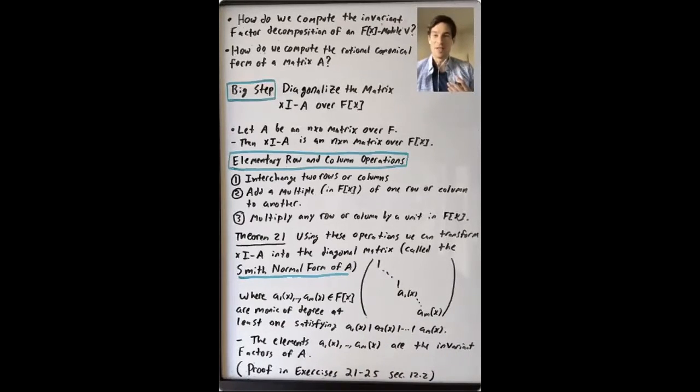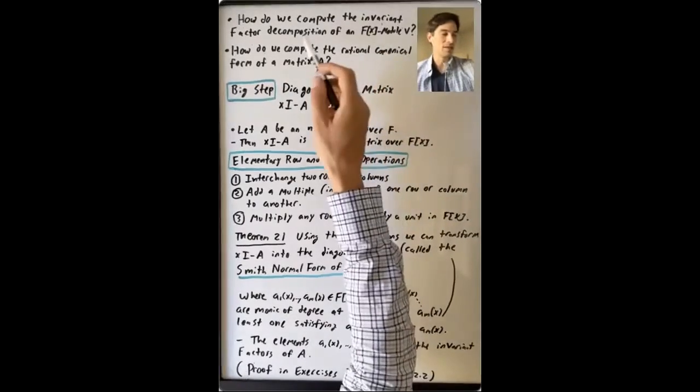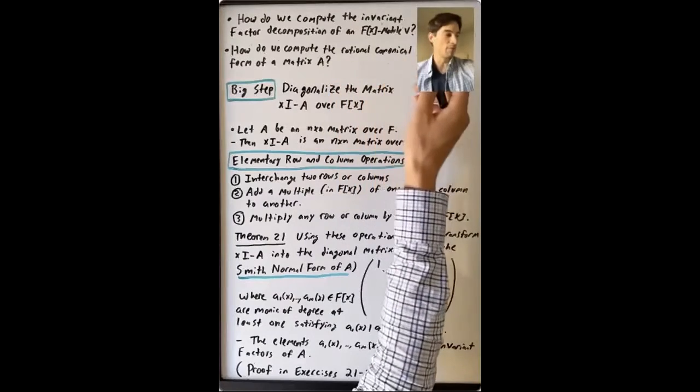We know that if you have an F[x]-module V, that you can give it an invariant factor decomposition that's isomorphic to this direct sum of cyclic F[x] modules. But how do you actually compute this invariant factor decomposition of an F[x]-module V?